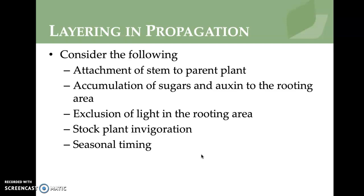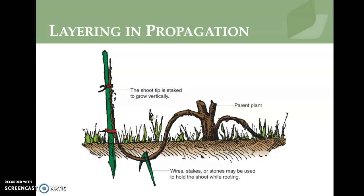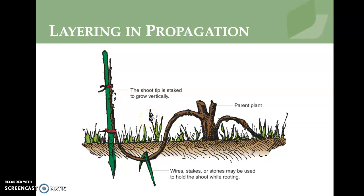Seasonal timing matters — hostas, for example, divide well in the fall, while some plants prefer spring. This image shows layering in action: the parent plant has a shoot being forced into the ground, with the growth staked to produce roots. This works really well with willow trees.